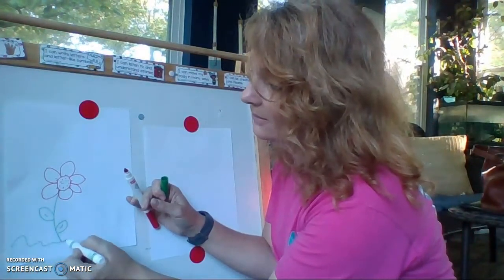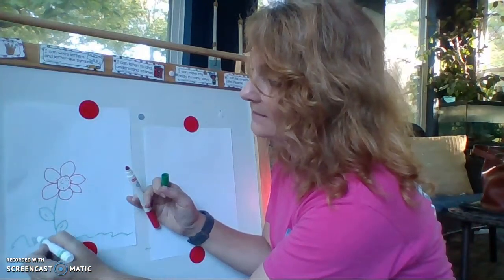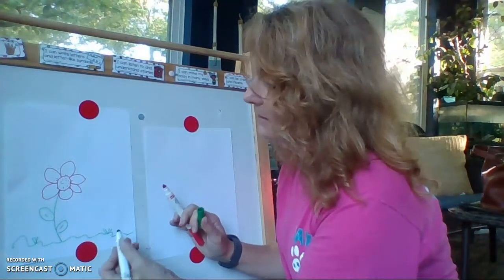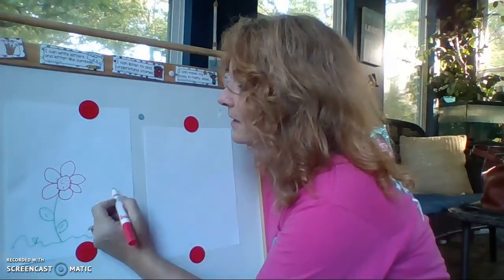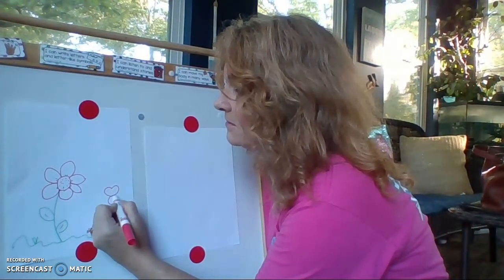And then of course flowers don't float, so we have to make some grass for them or a pot, however you want to do it. So we'll add some grass here and I'm going to make another flower beside it. I'm going to show you how you can make kind of a simple dogwood shape by making hearts. You make little heart shapes around that circle.